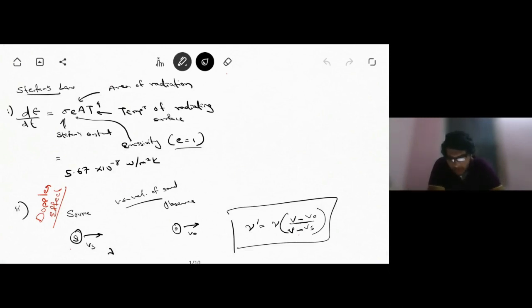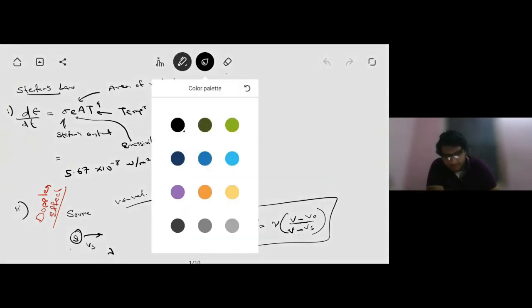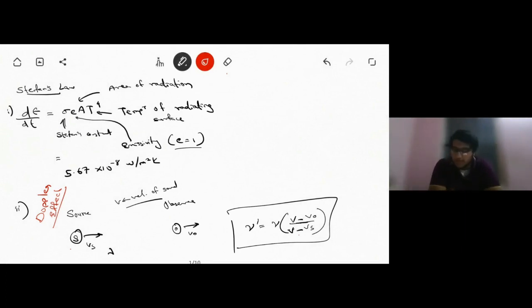The first thing we're supposed to be knowing is Stefan's law. In Stefan's law, we can say that the power dissipated or the rate of change of energy is given by sigma e A T to the power 4. Sigma is Stefan's constant, given by 5.67 times 10 to the power minus 8 watt per meter squared Kelvin. E is emissivity of the body; for a blackbody it's 1. A and T are area and temperature of the radiating surfaces.